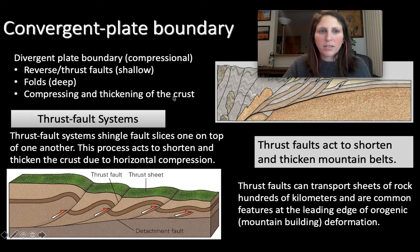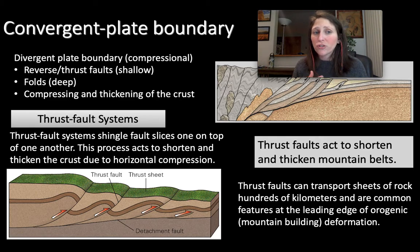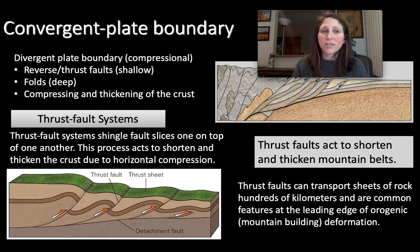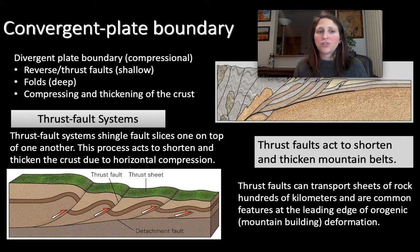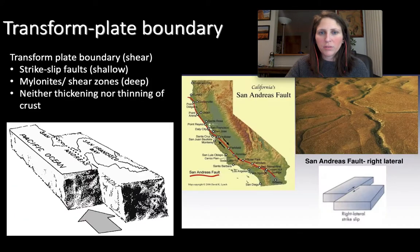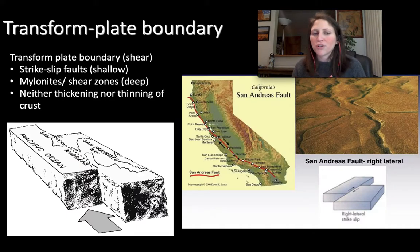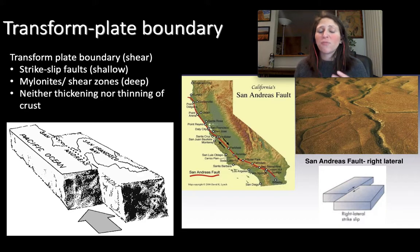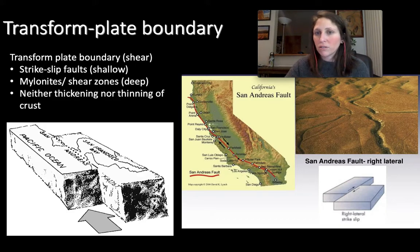At convergent plate boundaries, you're going to have reverse or thrust faults and folds — all from convergent compressional forces that compress and thicken the crust. Transform plate boundaries are pretty self-explanatory: you're going to have strike-slip faults and mylonites or shear zones, and the crust is neither going to thicken nor thin — it stays relatively the same thickness.